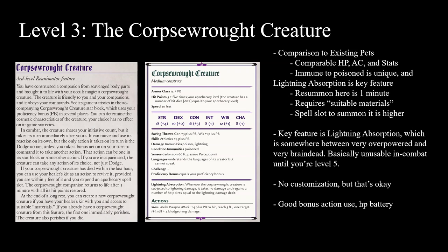Jumping into the design, the first thing to look at is the Corpse Art creature itself. It compares favorably to other pets — HP, AC, and stats are all comparable to what already exists. All these pet subclasses have a unique feature; for instance, the Wildfire Druid's spirit can use its action to teleport itself and allies and deal damage. Every pet subclass has something special right at 3rd level — except for the Corpse Art creature.